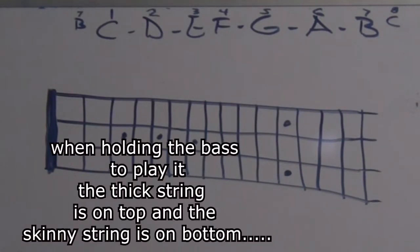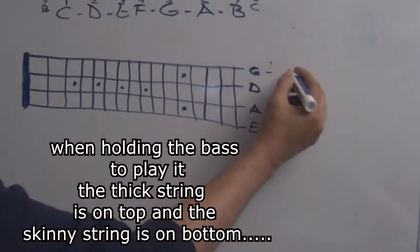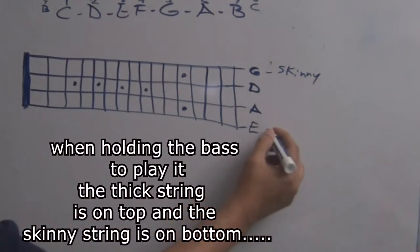Let's start here. The bass, the bottom string is the E string, the thick string. So you got E, and we got A, we got D, and we got G. This is the skinny string and this is thick.